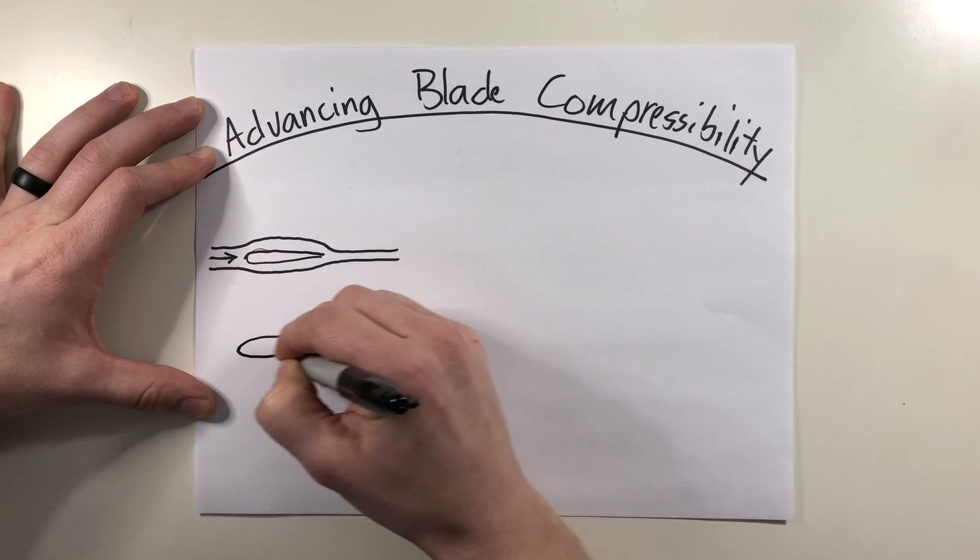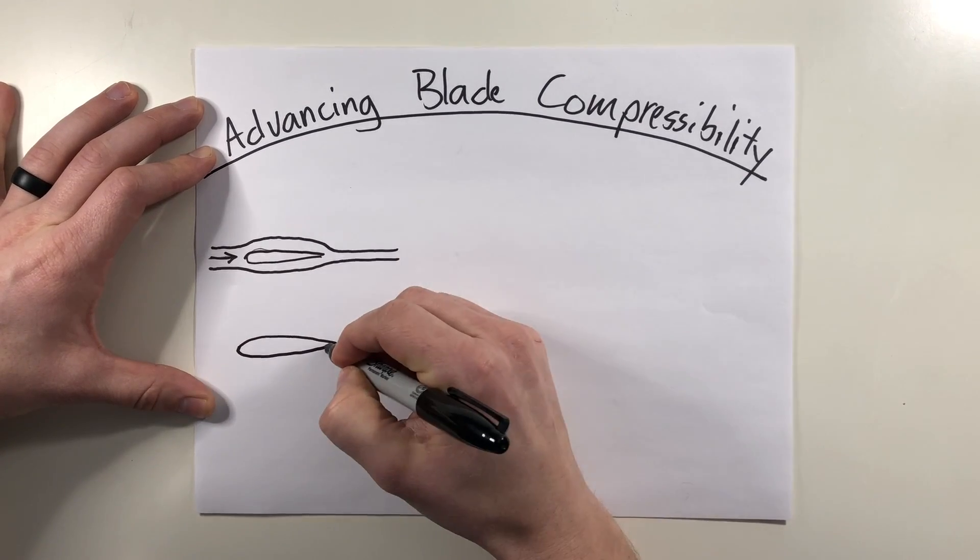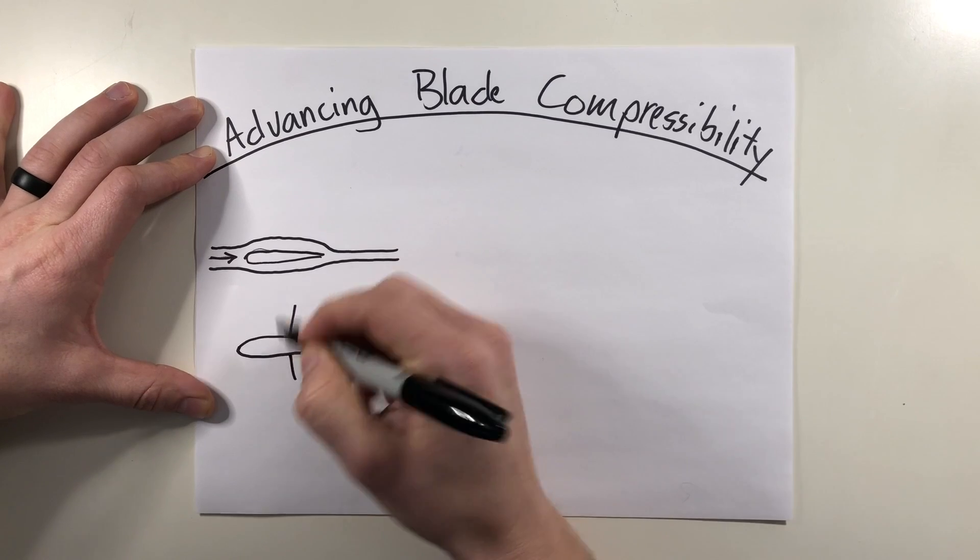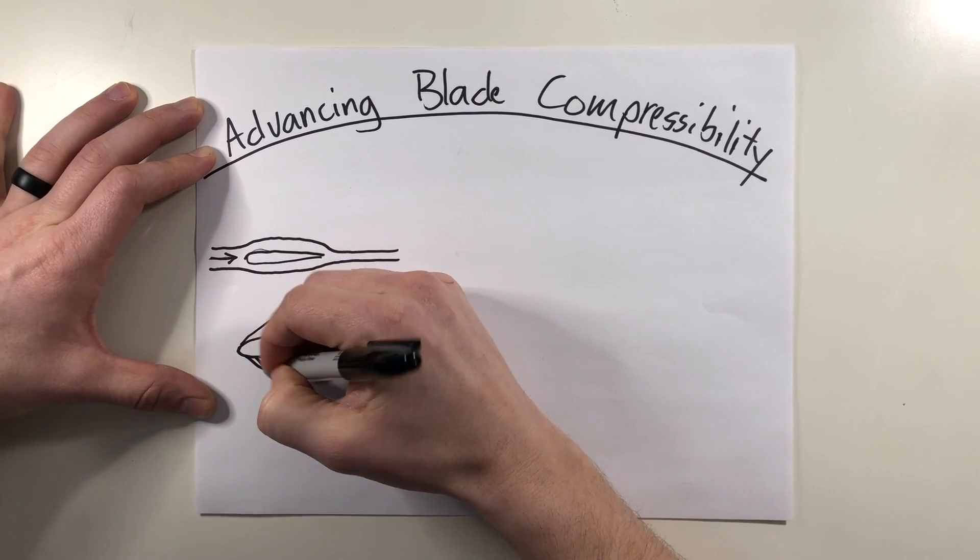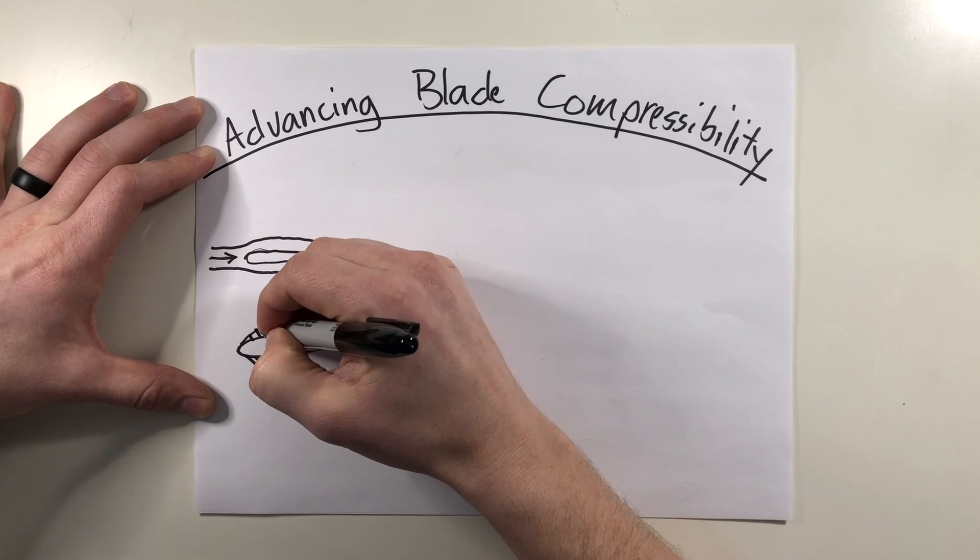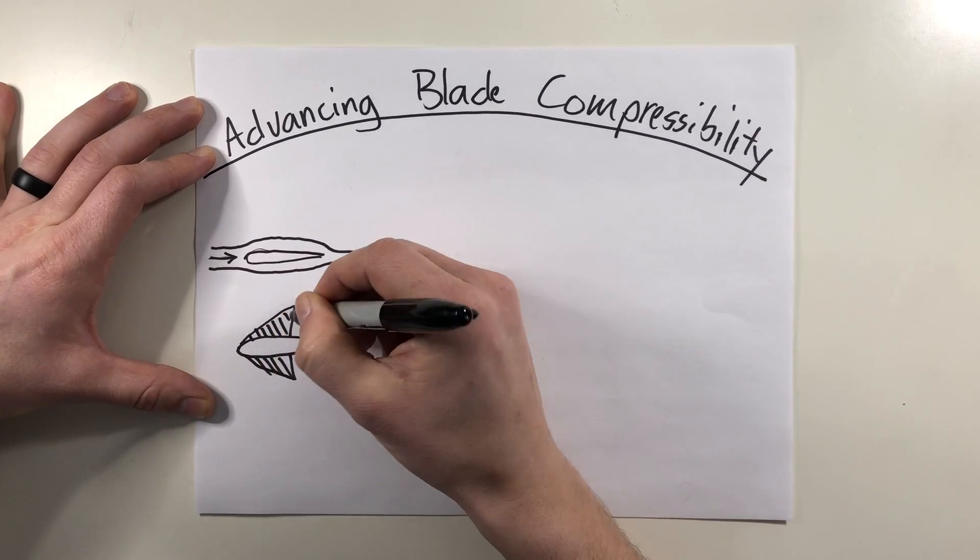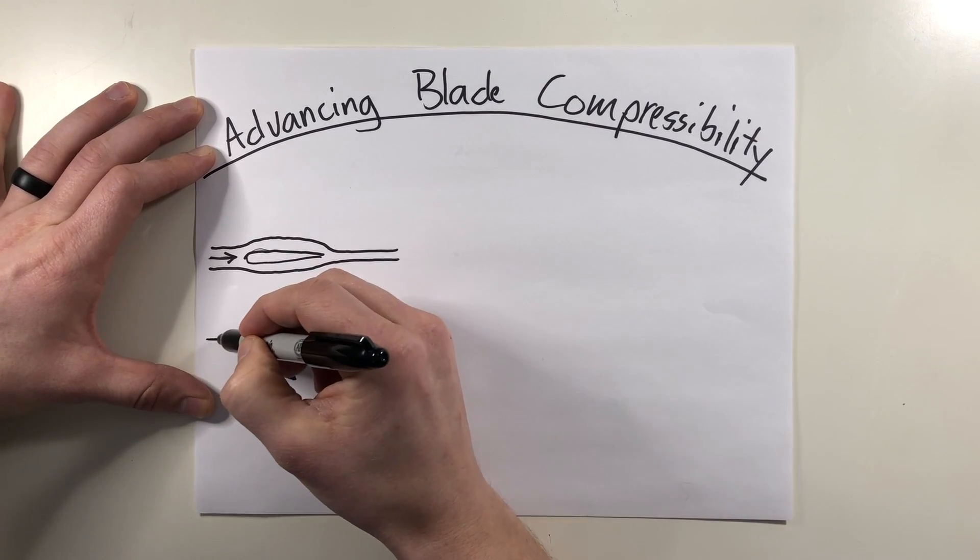So if that's your airfoil, now you're going to have some shock waves start to build up. So these shock waves are looking something like this, where you're going to have a region along the blade that has supersonic airflow.